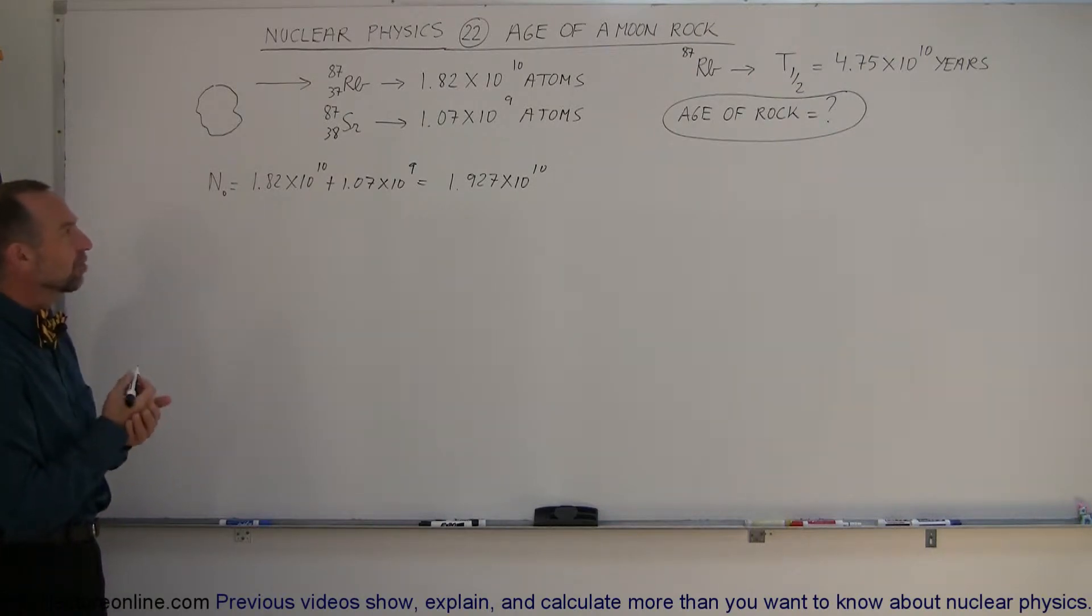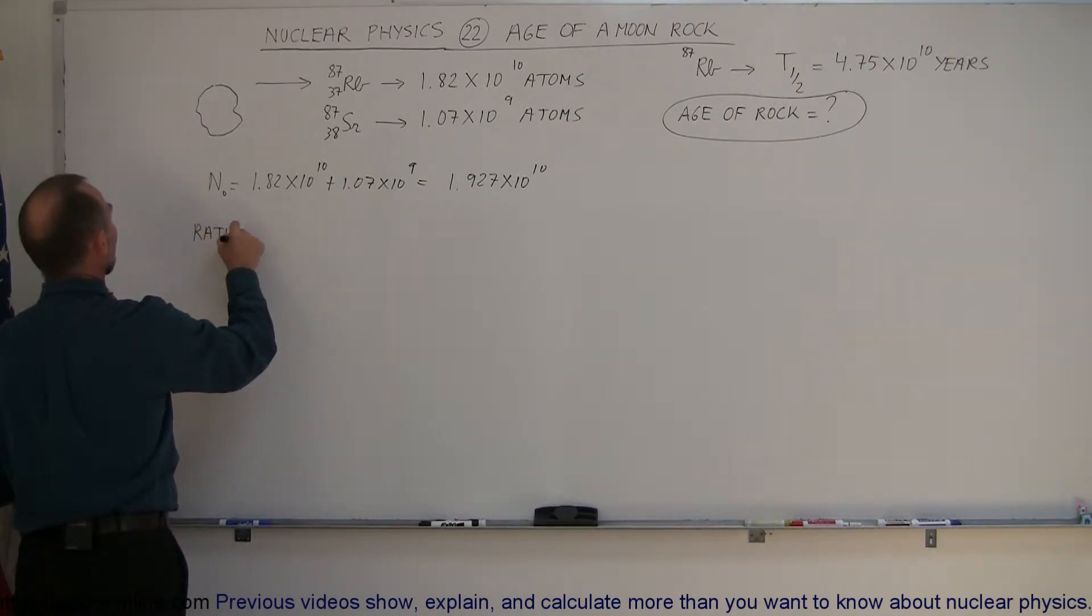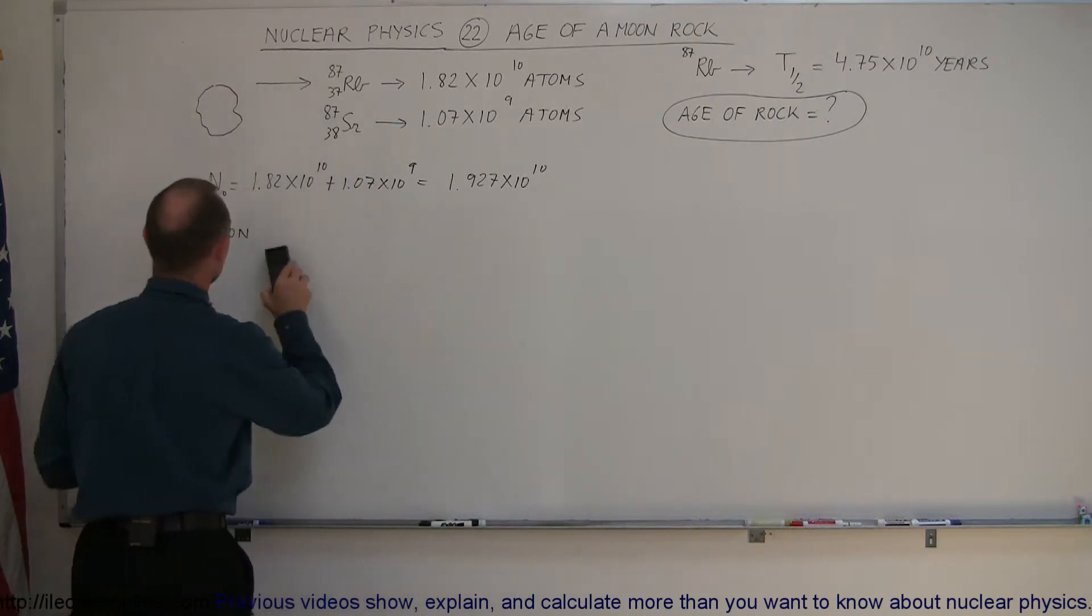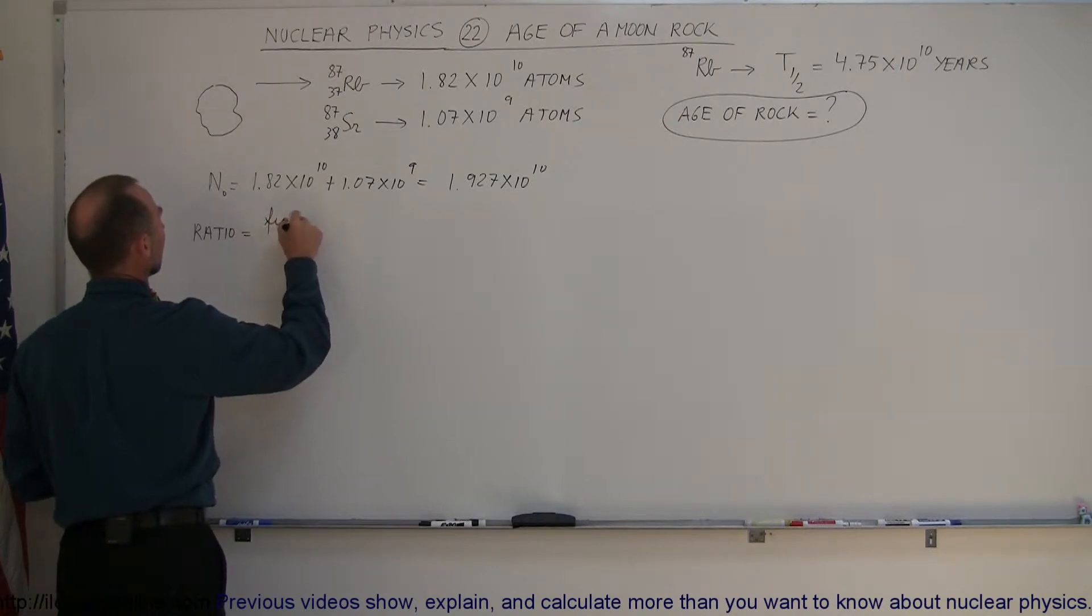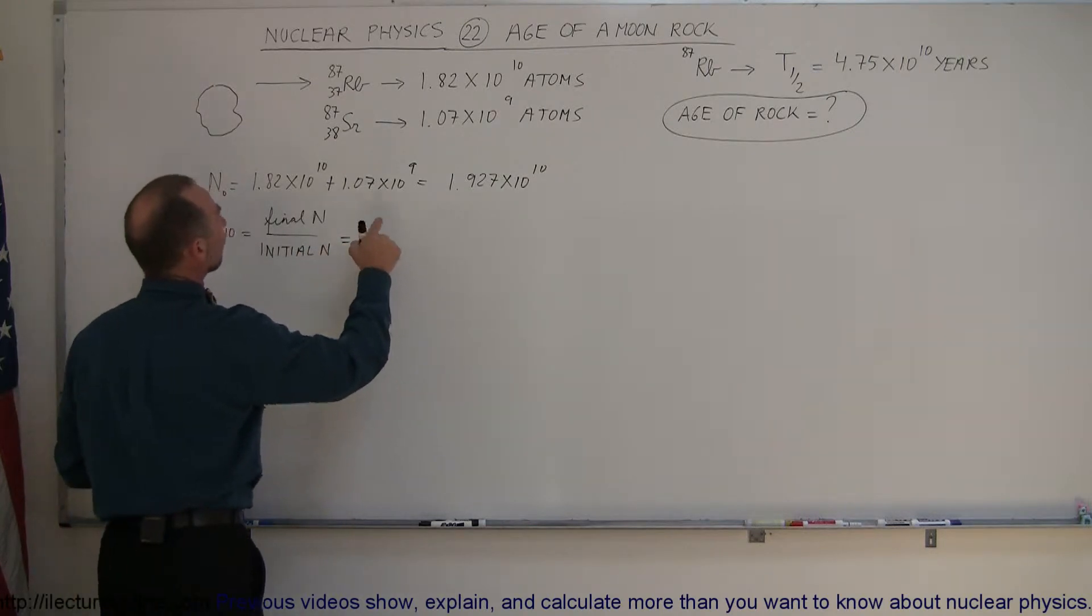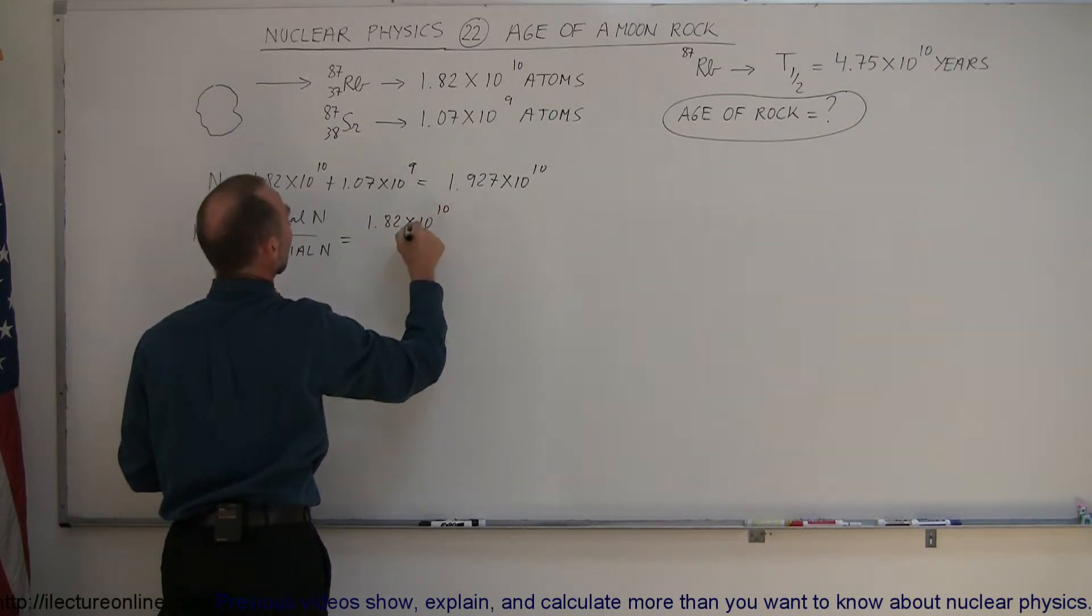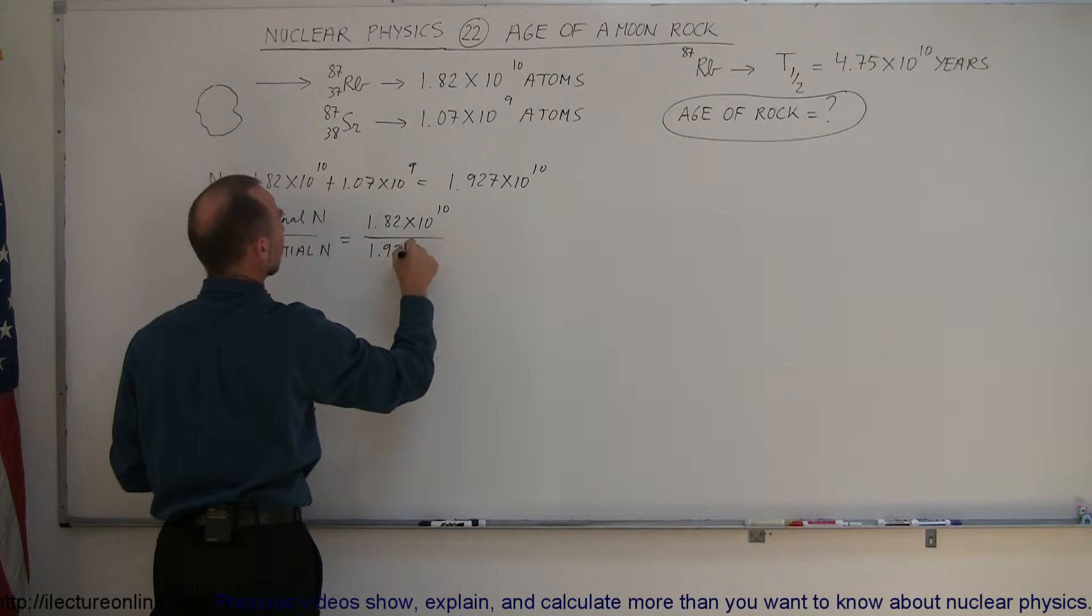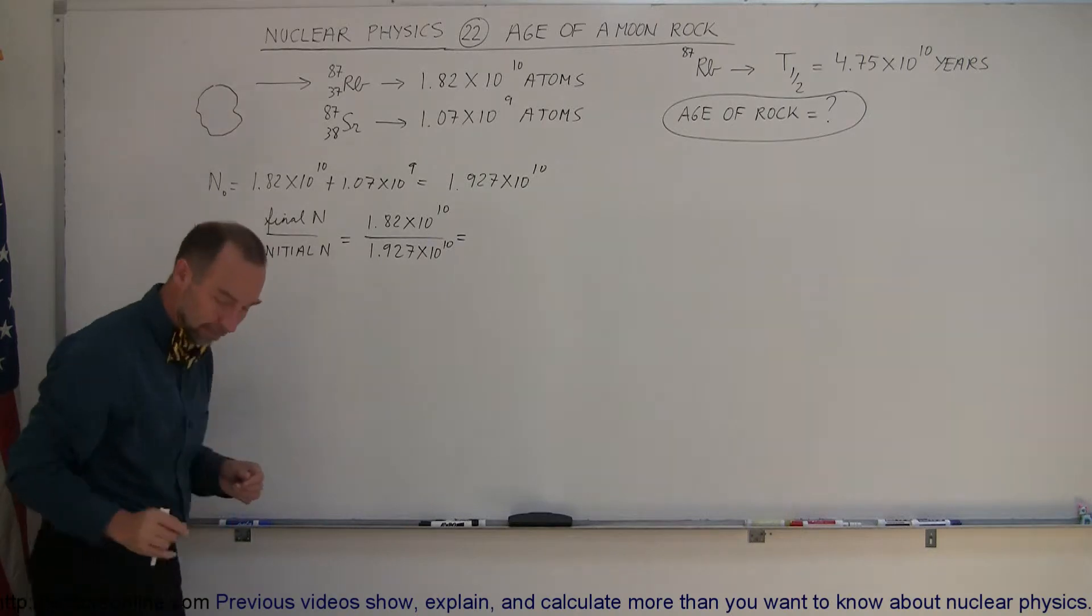So let's now find out what the percentage that has decayed. So we're going to take a ratio. The ratio of the final amount is equal to the final number divided by the initial number. And if I write initial so you can read it, that would help. Initial number N. So that would be the final number would be how much we have left, 1.82 times 10 to the 10th, and how much we started with was 1.927 times 10 to the 10th. And that will give us the amount that's left by finding that ratio.